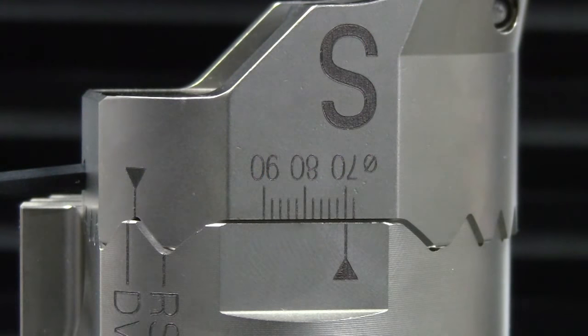The boring heads feature a setting scale to permit diameter adjustments without the need for a tool pre-setter or external indicator. The scale shows metric diameter values and the adjusting screw has a fine metric pitch. For boring head sizes 20 to 32, 1 revolution equals 0.5 millimeters or 20 thousandths on diameter. For larger heads, 1 revolution equals 1 millimeter or 40 thousandths.